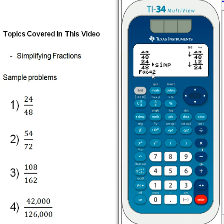If I hit simplify and enter, it gives me 12 over 24 and says fact equals 2, that's factor equals 2. It reduced the numerator and denominator of 24 over 48 by 2, but notice there's still a down arrow. We hit simplify again and enter, and it gives me 6 over 12, telling me it simplified by a factor of 2 again, but there's still a down arrow.